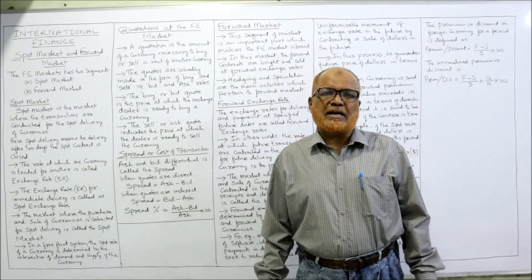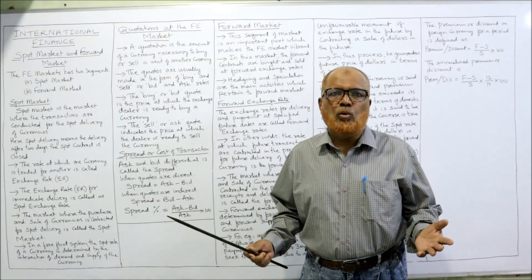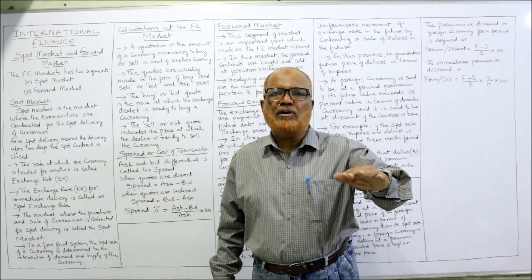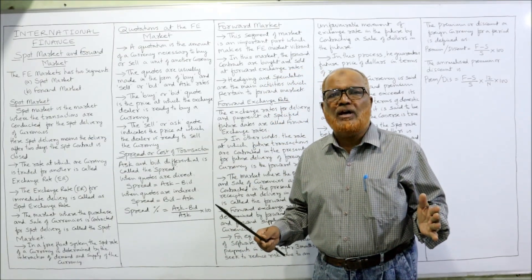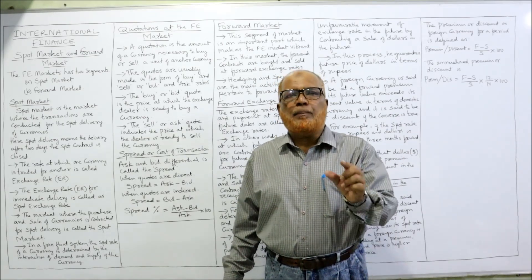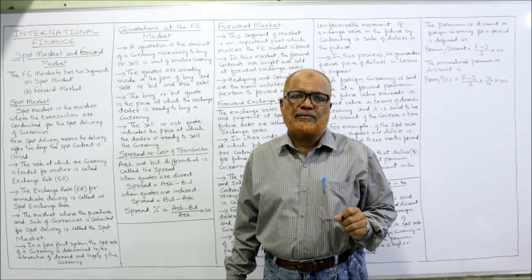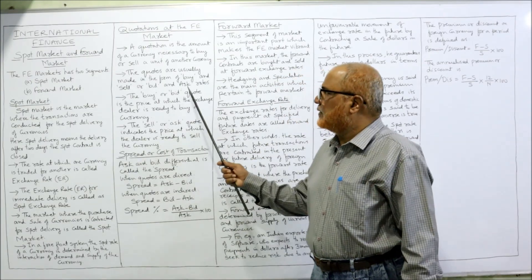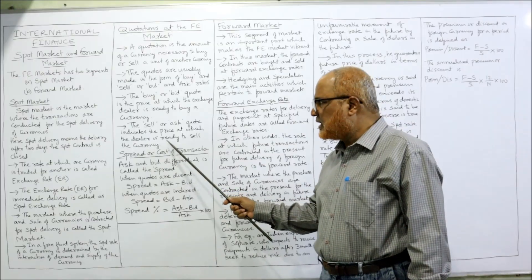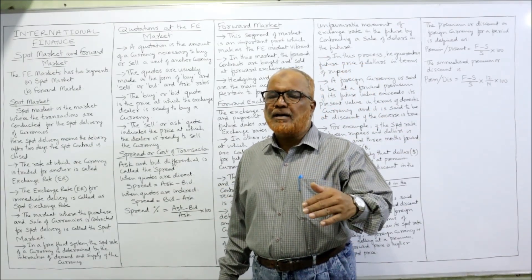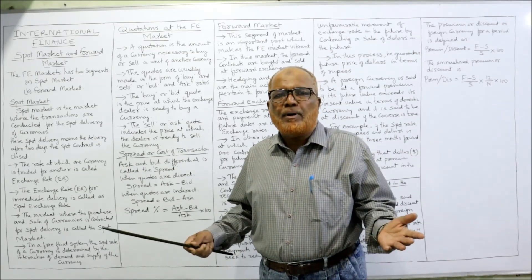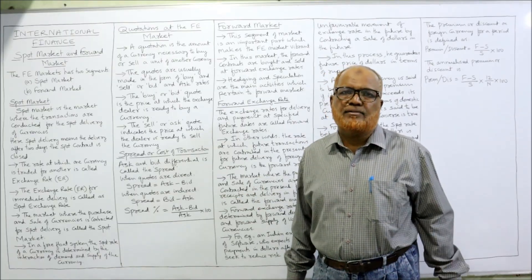Quotes are normally made in the form of buy and sell, or bid and ask. In the foreign exchange market we have a purchase price and a selling price for foreign currency. The purchase or buying price is called the bid price, and the selling price is called the ask price. The bid price is the price at which the dealer is ready to buy, and the ask price is the price at which the dealer is ready to sell.